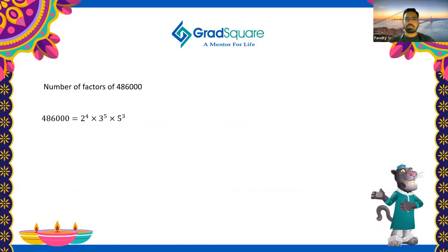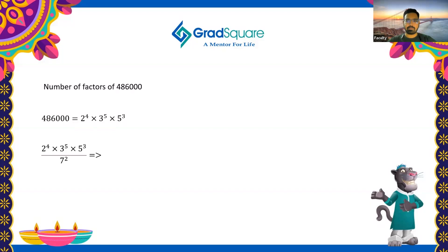The prime factors of 486,000 are 2, 3, and 5. The number 2 is involved four times, so we have 2⁴ × 3⁵ × 5³. If we multiply these three terms together we get 486,000. Now let's experiment with what can be factors of 486,000. If we try to divide by 7², a prime not present in the factorization, we find it is not divisible. So factors of 486,000 must not contain a 7.